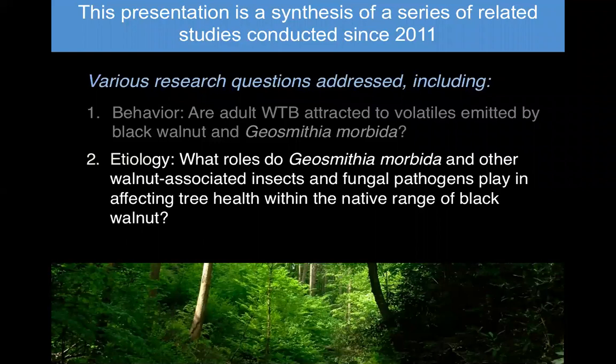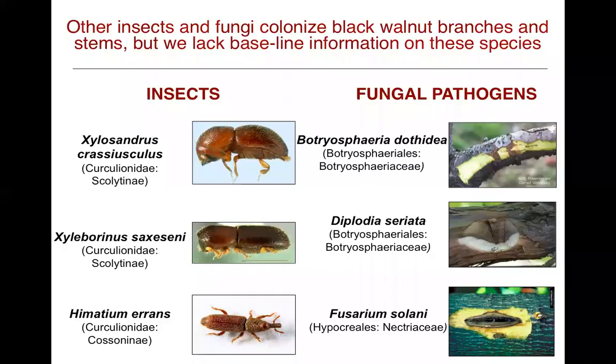The second part of my talk today surrounds the etiology of this disease within the native range of black walnut. We're asking questions about the roles of Geosmithia morbida and other insects, fungi, and fungal pathogens associated with black walnut in affecting tree health in the native range.